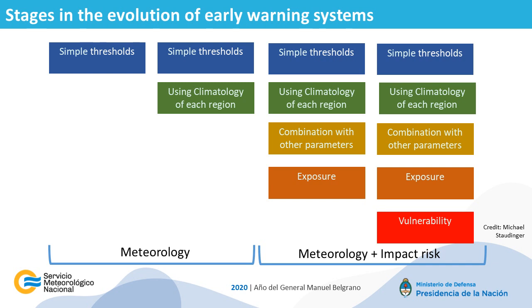The conceptual model can be seen from a met-service perspective in the following way. We can describe different stages in the evolution of early warning systems where we can improve thresholds by using the climatology of each region or location. In the following step, we can combine climatology with other parameters, like relationships between impacts and information of exposure. And in a further step, including vulnerability information. So we can have different types of warnings related not only to the kind of information available, but also to the analysis that can be done and the relationships that can be established between the different factors.